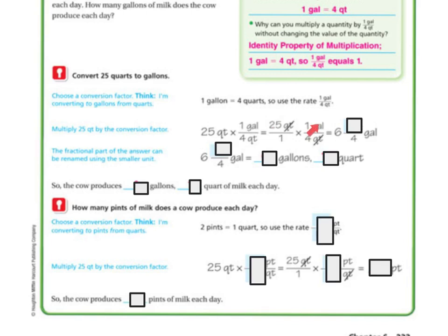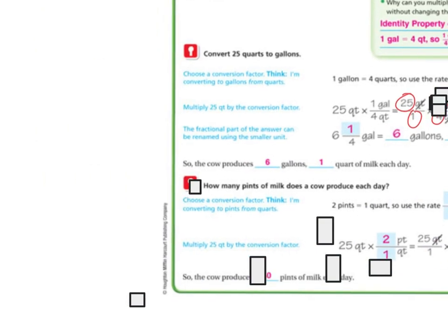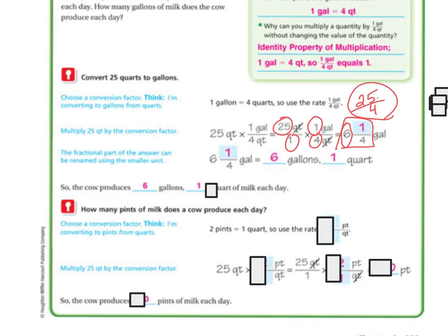So 25 times 1 is 25, and 4 times 1 is 4. Since we have the top number on the top, 4 goes into 25 six times with 1 left over. So it's 6 and 1 quarter. Because 4 times 6 is 24, and that would be 1 left over. So 6 and 1 quarter gallon equals 6 gallons and 1 quart. So the cow is going to produce 6 gallons and 1 quart of milk each day.